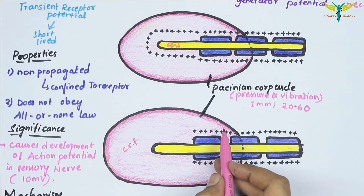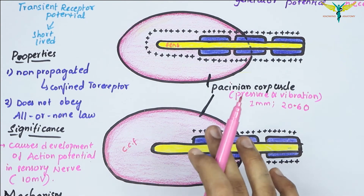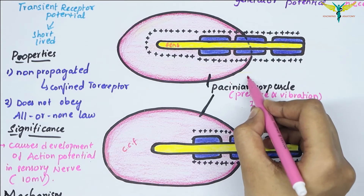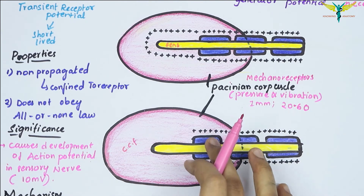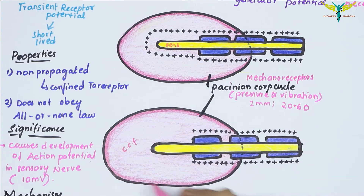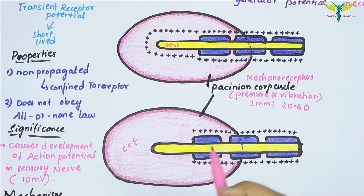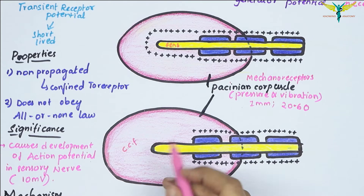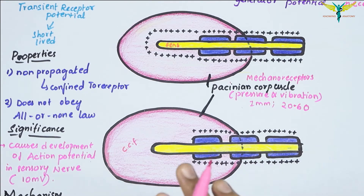The concentric layers of the corpuscle surround the core fiber of the nerve. When pressure stimulation is applied, the Pacinian corpuscle gets compressed, causing elongation or a change in shape. This change leads to deformation of the central core fiber, resulting in the opening of mechanically gated sodium channels, so positively charged sodium ions enter the interior of the core fiber, producing a mild depolarization — that is the receptor potential.